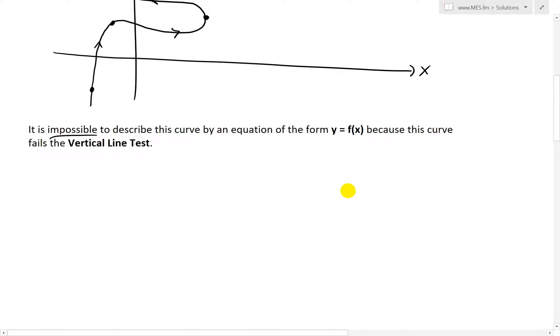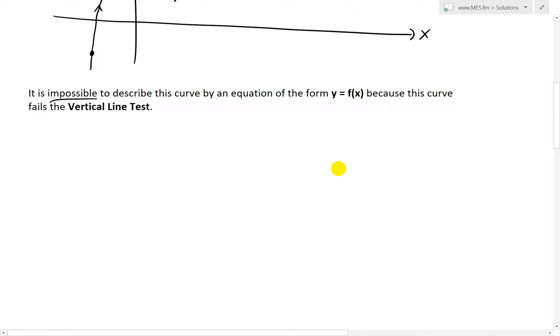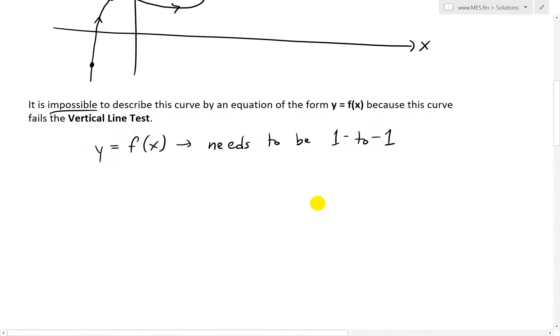I haven't gone over this vertical line test in detail before. I'll go over it in a further video in more detail. So basically, if we have the function y equals f(x), the problem is this needs to be one to one. In other words, we need one x value for each y value.